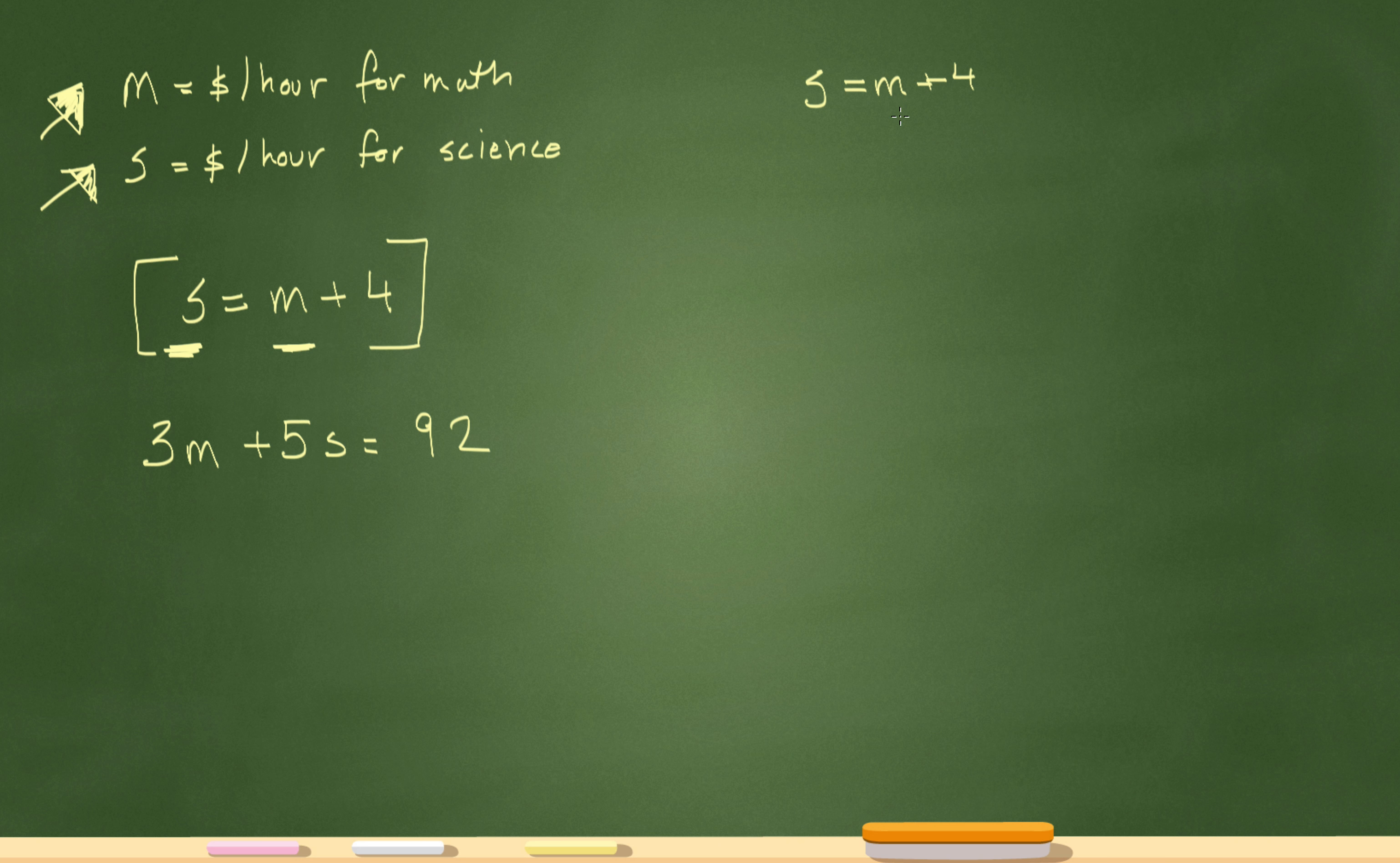Let me rewrite this over here so it's a bit clearer. S equals M plus 4, and 3M plus 5S equals 92. If this rings a bell from algebra classes, this now is a system of equations. There's really two best ways to solve: one is elimination and the second is substitution, and this one looks like substitution might be easier because it tells me S equals M plus 4.